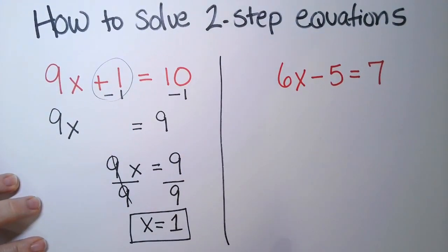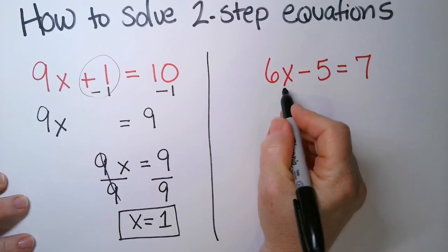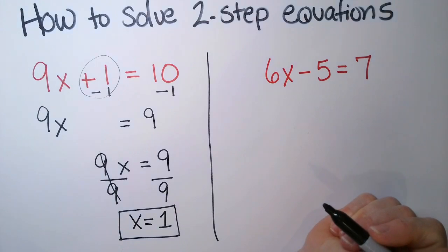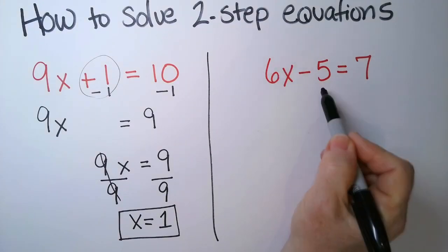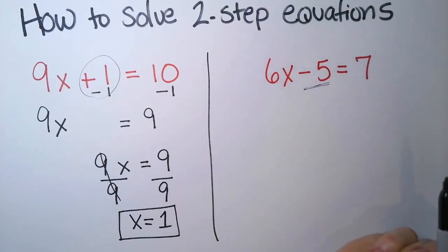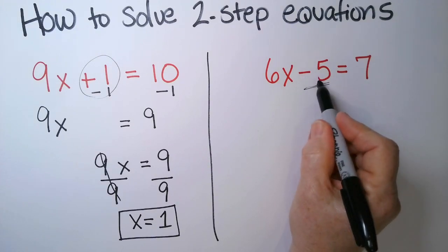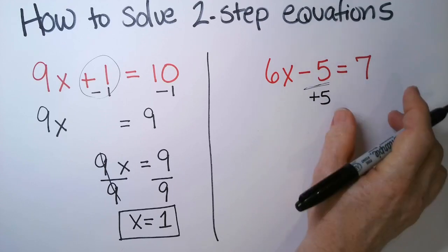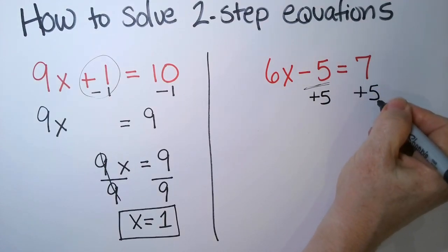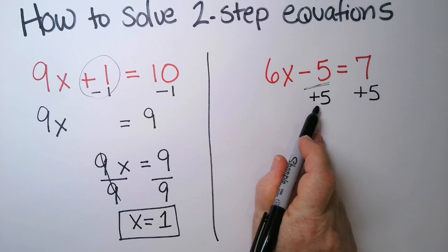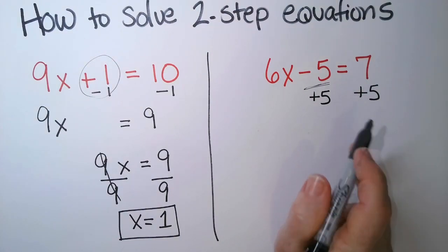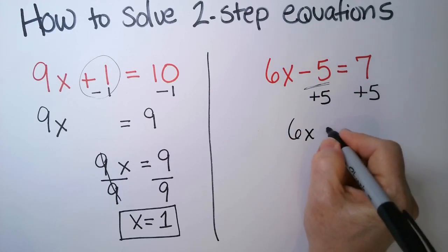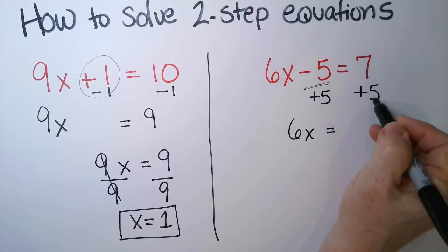Let's take a look at the second one. I have 6x minus 5 equals 7. So do your addition and subtraction first. Don't mess with the six yet. This is what we want to handle first. It's a minus five, so we have to add five. We want to make this go to zero, because we want it to pop up on the other side of the equation. Whatever you do on one side, you've got to do on the other. So let's rewrite it. This is 6x minus 5 plus 5 is zero, equals, and seven plus five is twelve.